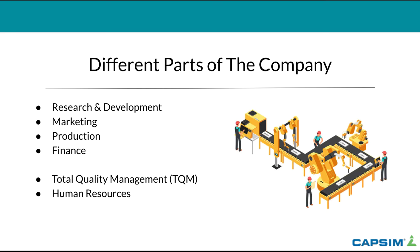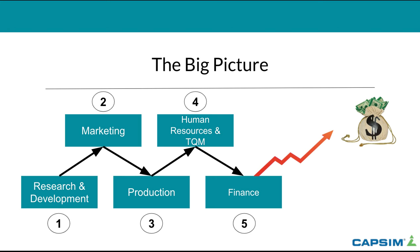Here's the overall big picture for how I would make decisions: one, start with research and development; two, move to marketing; three, production; four, human resources and total quality management if your professor has it enabled; and five, finances. After you complete these five decisions, you can advance a round or submit your decisions, and hopefully your stock price will increase, your profitability will grow, and you'll start earning money.